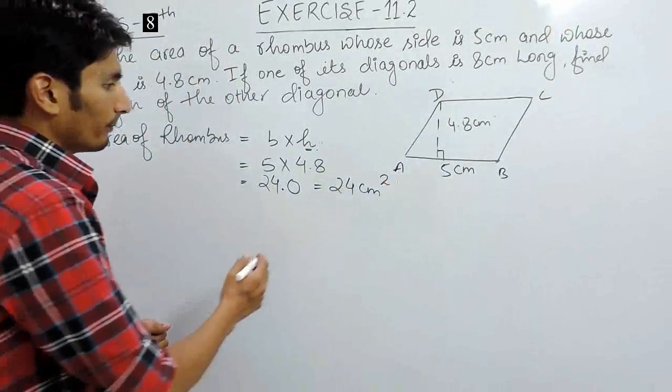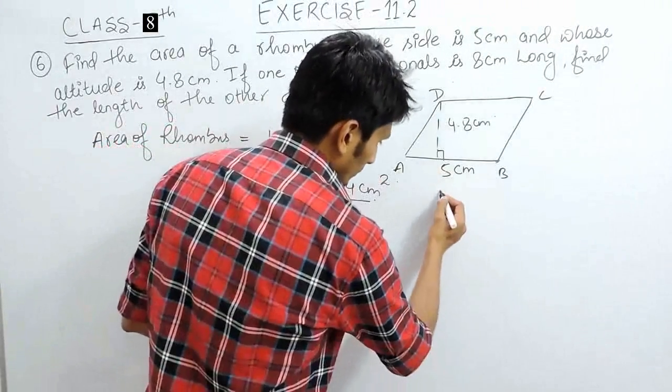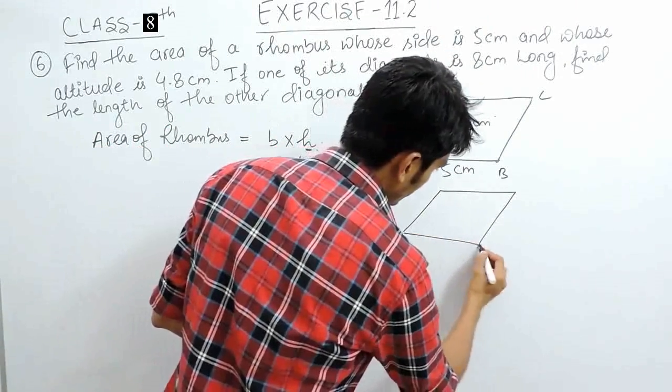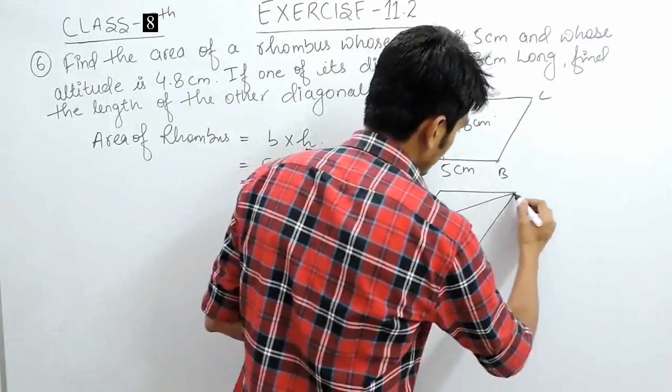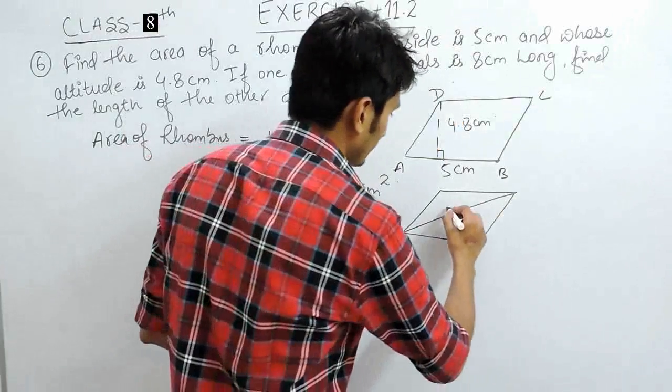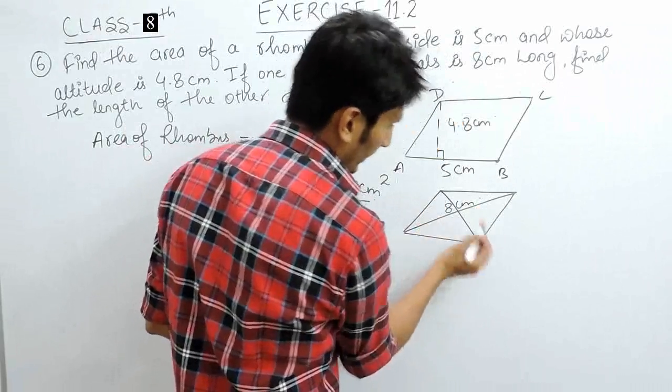We know that the area of the rhombus is 24 centimeter square and one of its diagonal is given to us. This diagonal, the length of the diagonal is 8 centimeter. You have to find the length of other diagonal.